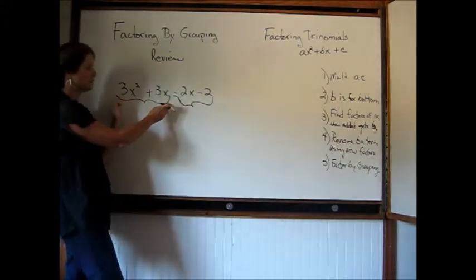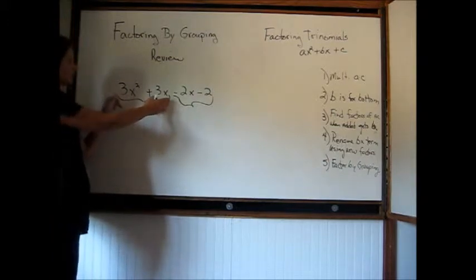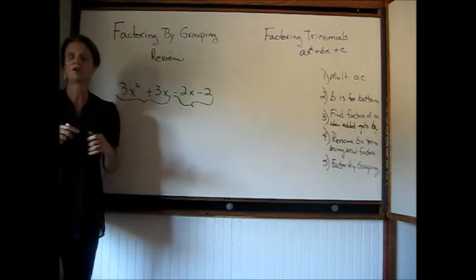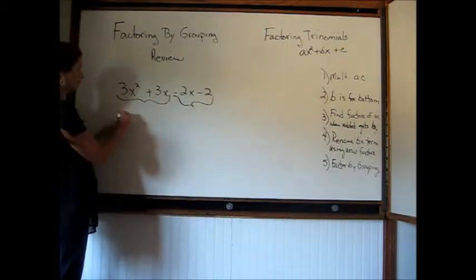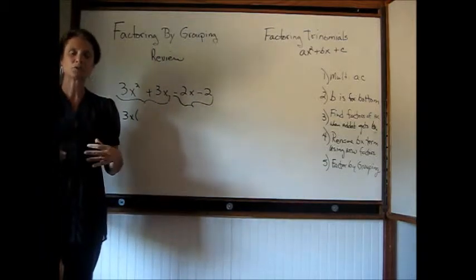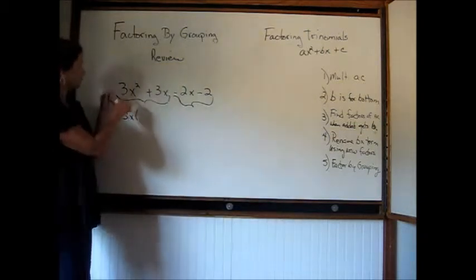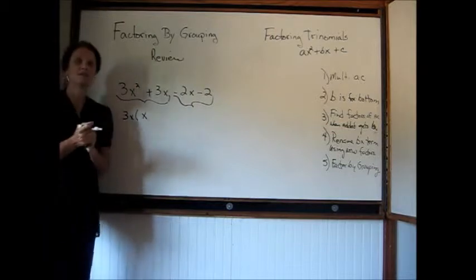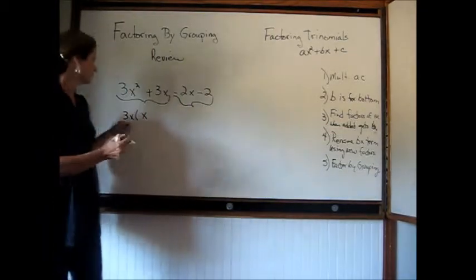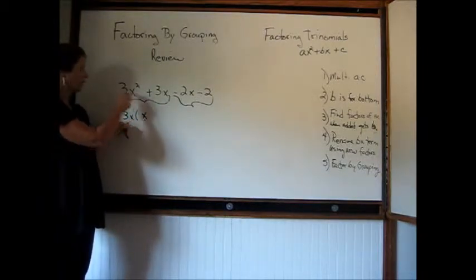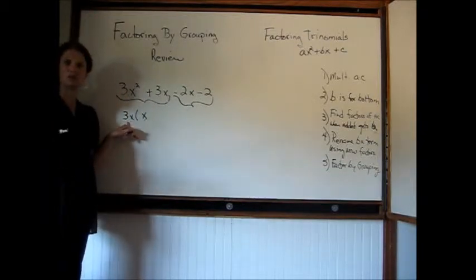We have one set of terms here and one set of terms here. When you look at these terms — and again this is a review — you need to ask yourself what do they have in common? These two terms have a 3x in common, and remember you're not adding or subtracting, you're actually dividing these. So 3x squared divided by 3x is x. To double check: when you multiply you go back to your original problem — 3x times x is 3x squared.